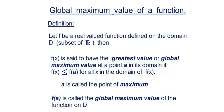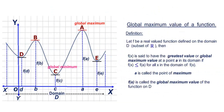As we have seen earlier, f(x) ≤ f(a). That means f(x) represents the ordinates of other points, and all of them are less than the ordinate f(a). Hence, we are calling this as global maximum, and A is called the point of maximum, and f(a) is called the global maximum value of the function on D. This is how we define global maximum value of a function.